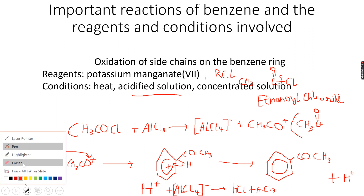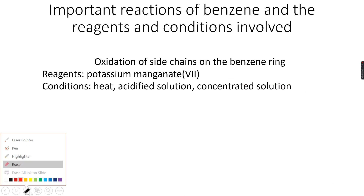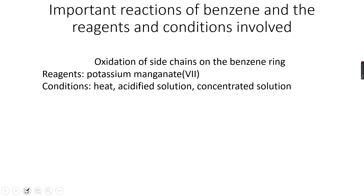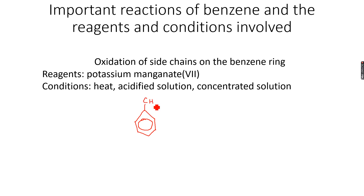Now we will do oxidation of the side chains on benzene. For example, we have side chains such as a methyl group. These side chains will always be alkyl groups. For example, here is my benzene ring with a methyl group — methylbenzene, CH3.